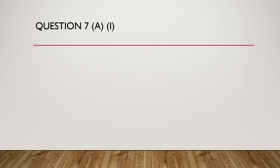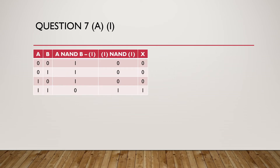Question number 7, Part A, first part: Calculate the truth table of the logic diagram. The truth table answer is 0, 0, 1, 0. The single logic gate that can replace this circuit is the AND gate.